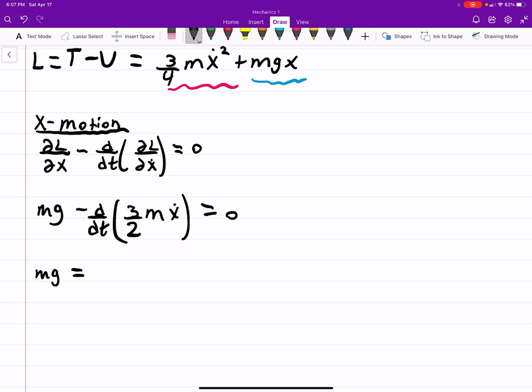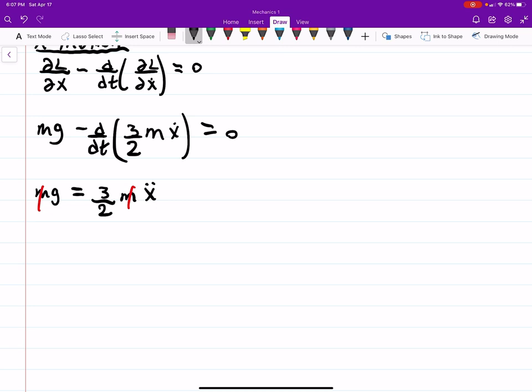Or mg is equal to 3 halves m x double dot. So I just take the time derivative, so I get x dot turns into x double dot, and then I moved it over to get rid of the negative. The masses you can divide out.